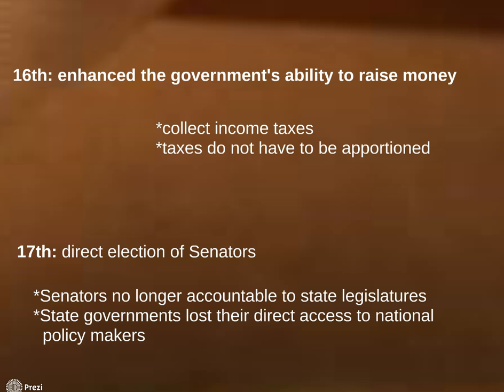Specifically, by offering state and local governments grants and aid, national officials have gained the power to determine many of the policies these governments approve, finance, and implement. For example, by offering grants to the states for highways, the federal government encouraged each state to establish a legal drinking age of 21 years.